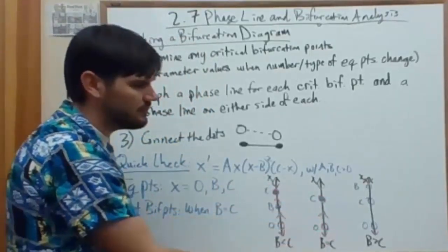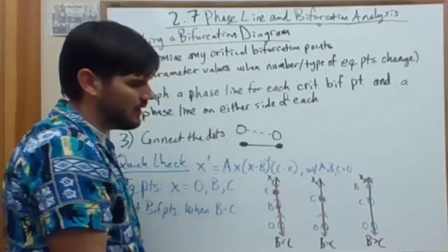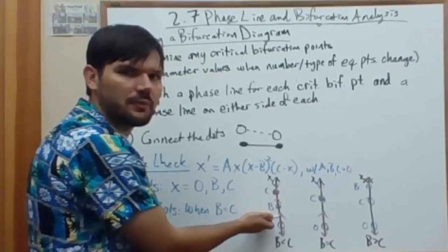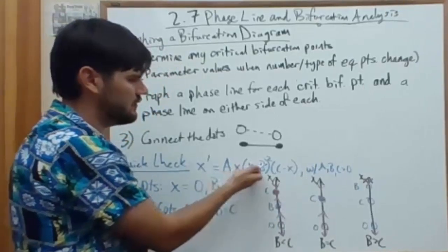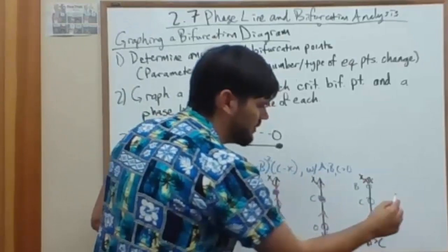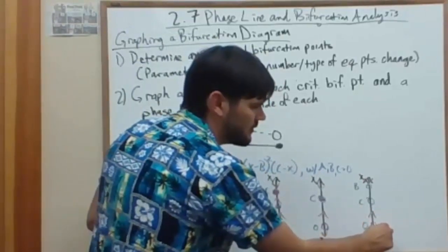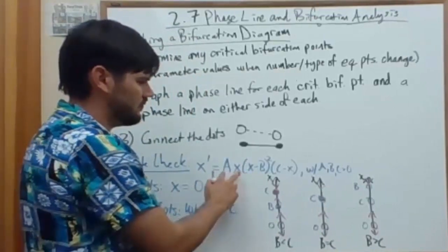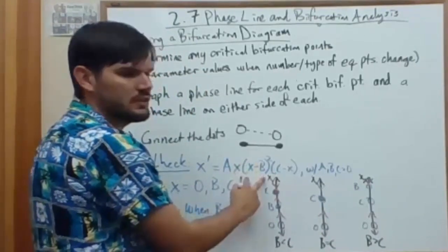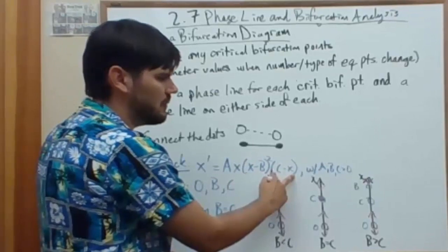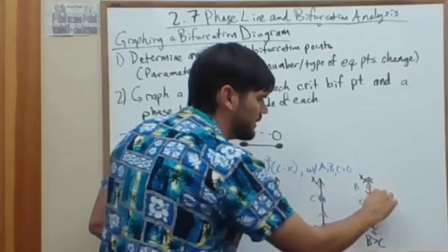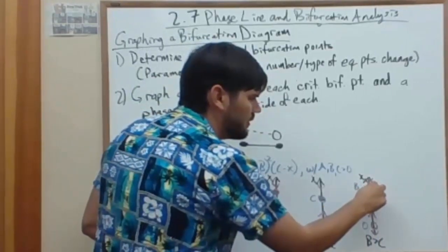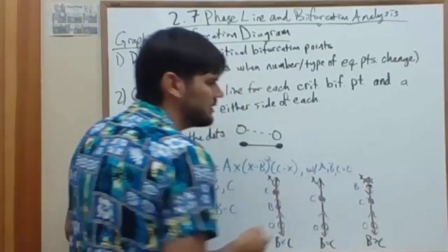And then finally, when b is greater than c, we look at the value when x is positive and less than both b and c. Positive, positive, positive, going up. Which makes this a source. And then between c and b, positive for x. This is positive because it's squared. And this c minus x is negative. Bringing it down. c and then b is semi-stable, filled in from the top.